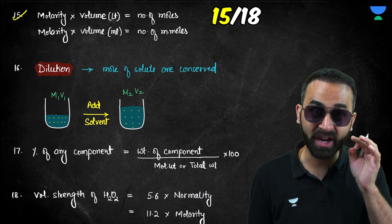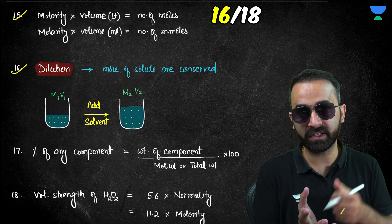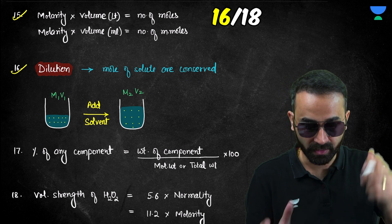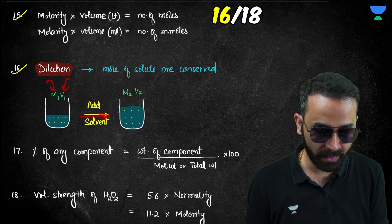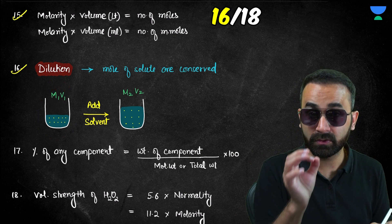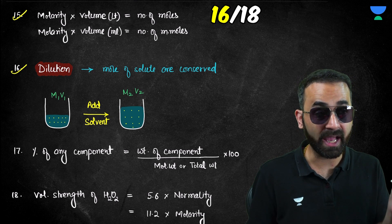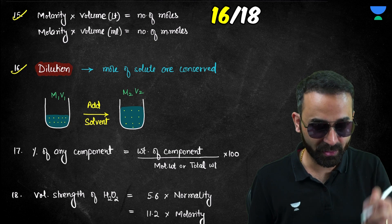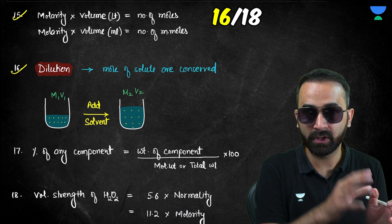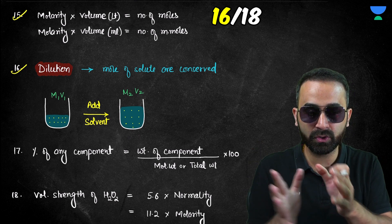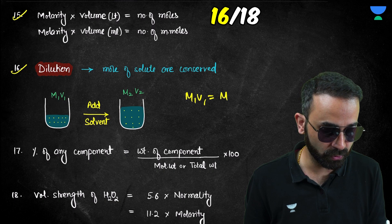For dilution, when we add more solvent to a solution, the number of solute particles does not change — only solvent is added. So moles of solute are conserved: moles before dilution equal moles after dilution. This gives the dilution formula: M₁V₁ = M₂V₂.